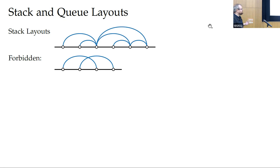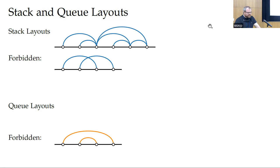In queue layouts, it's similar, but the forbidden configuration is not a crossing but instead a nesting. We cannot have two edges that nest, and then we get a queue layout.